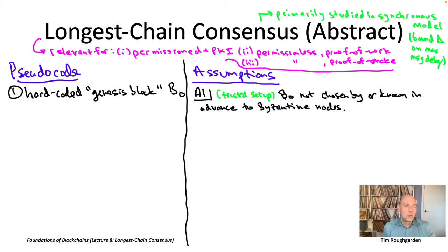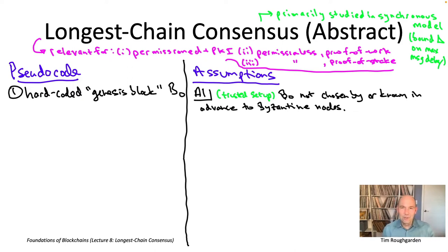This trusted setup assumption is the same for all three settings. We remain silent on why it might be true, in the same way we assume an adversary didn't tamper with the protocol code running on honest nodes.